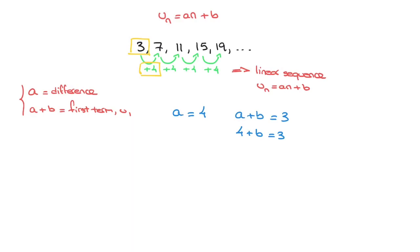Now, subtracting 4 from each side of that equation leads to b is equal to 3 minus 4. And finally, we can state that b is equal to negative 1.